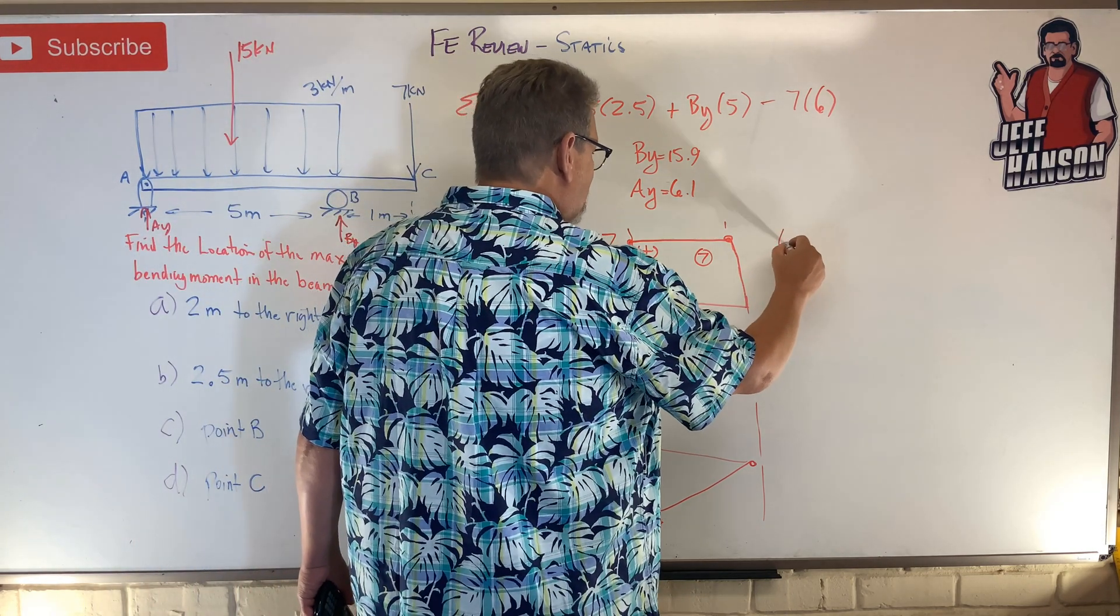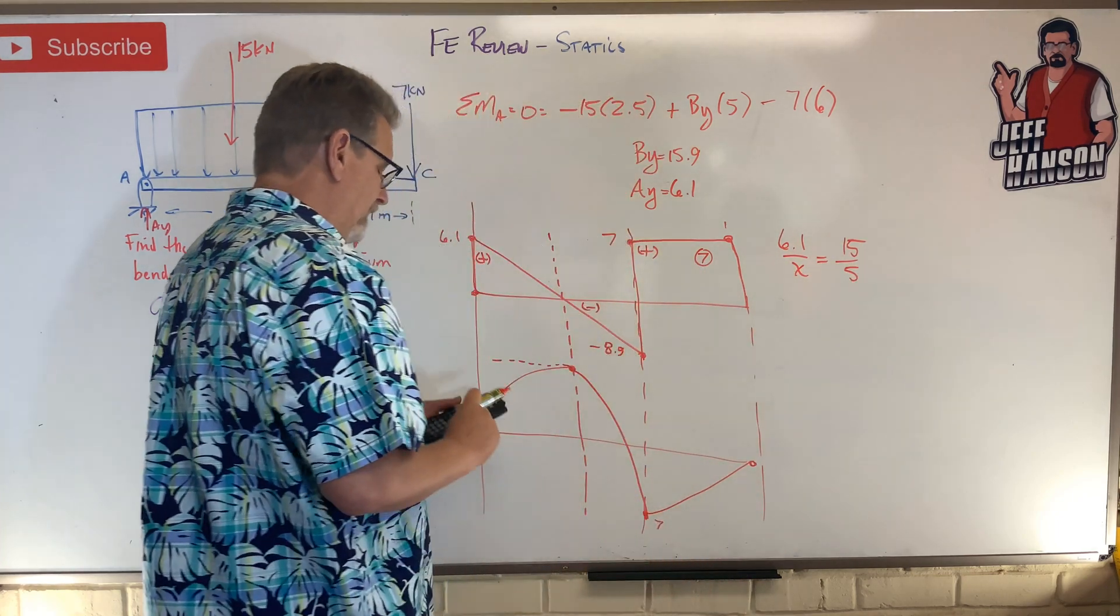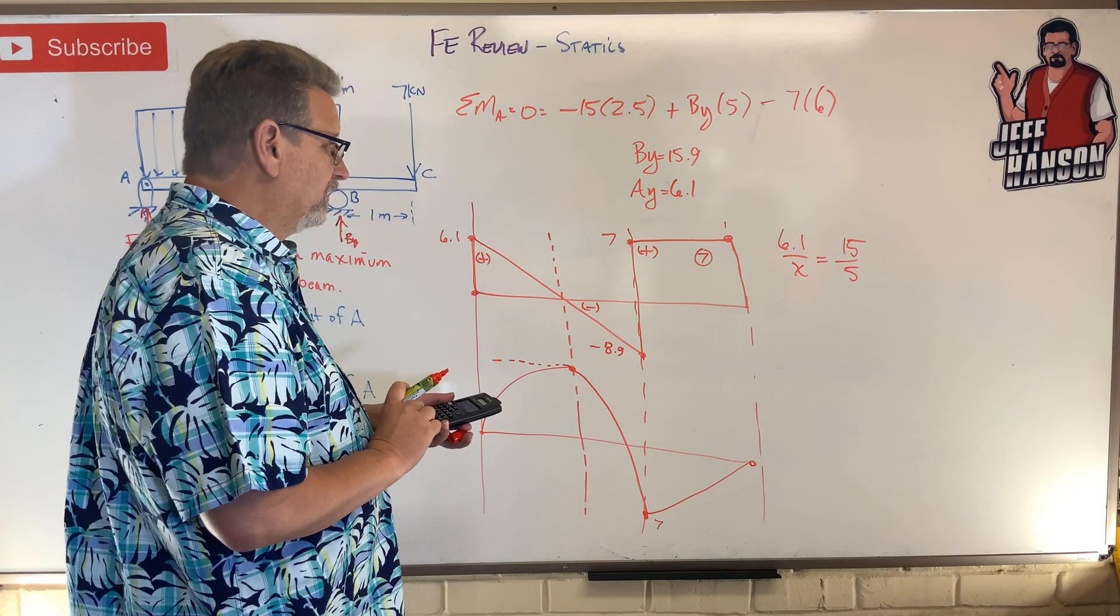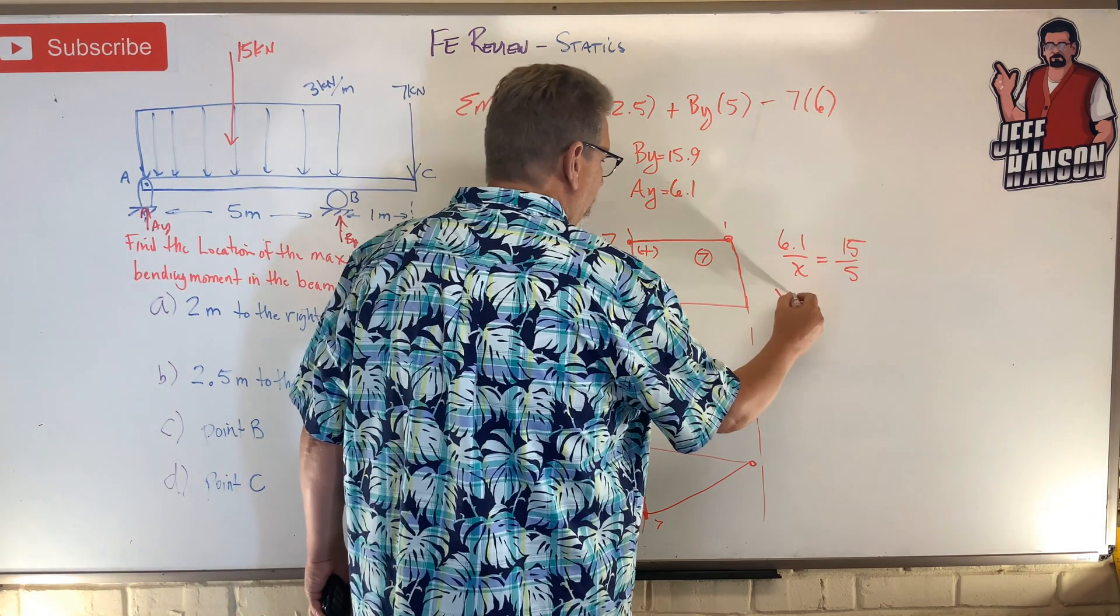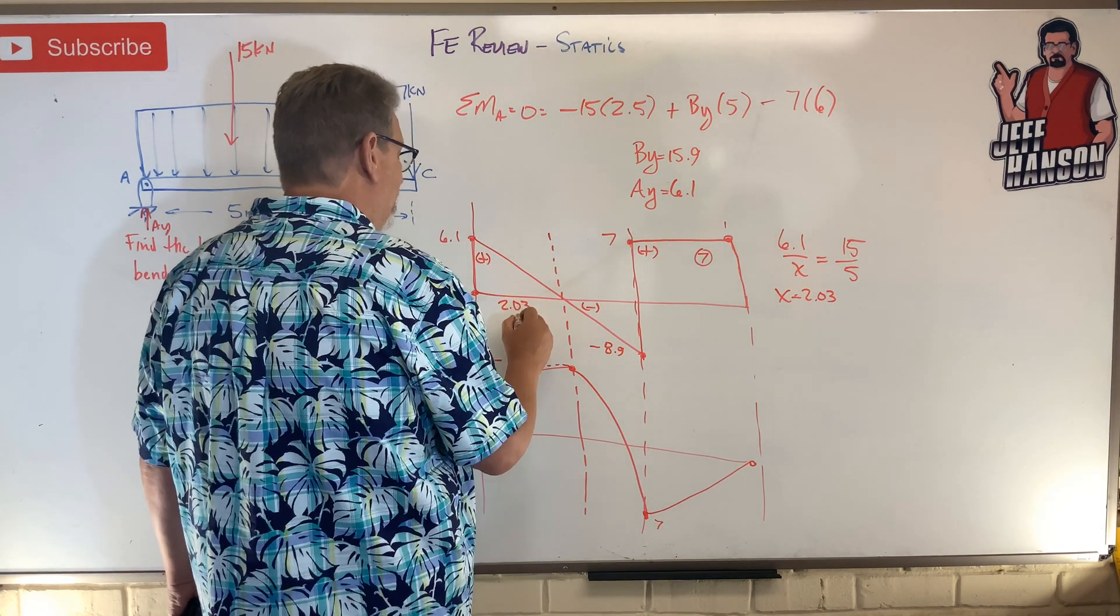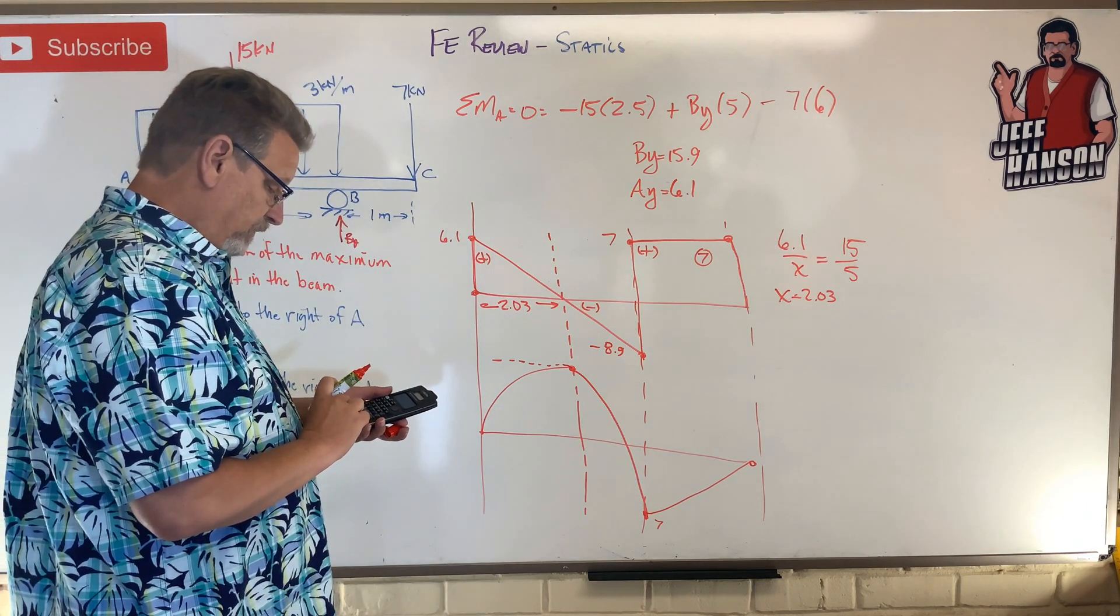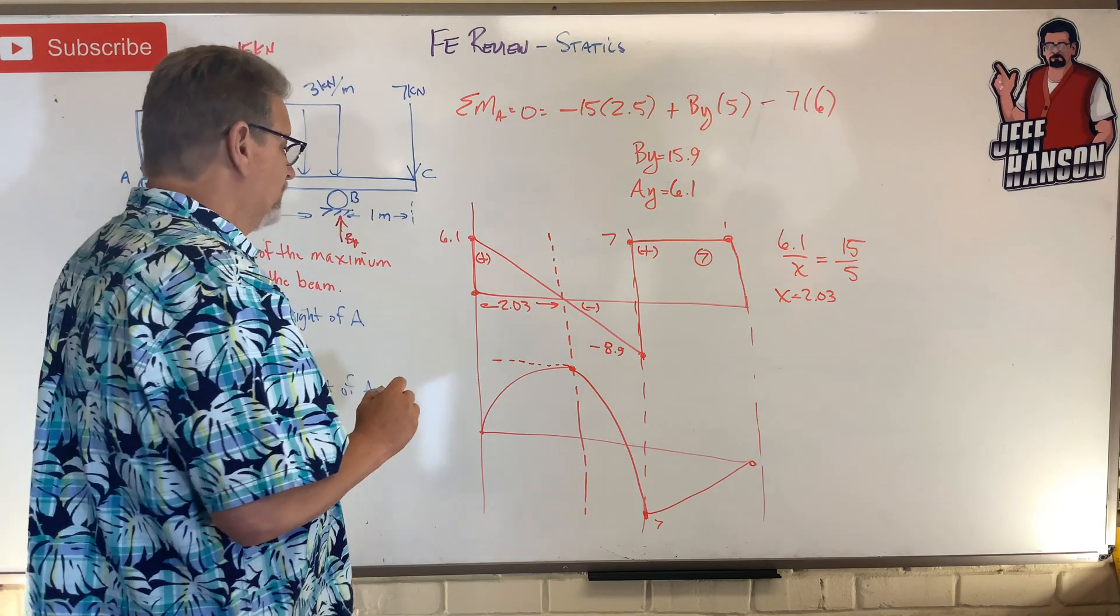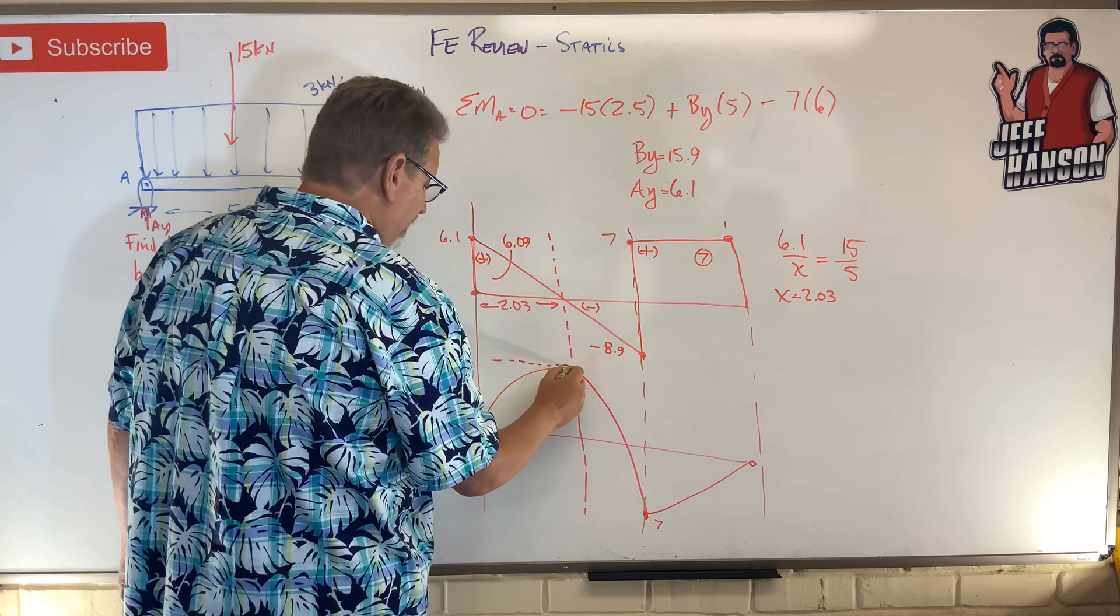I have to do this real quick. I have to do 6.1 is to x as 15 is to 5. So what is that? 6.1 times 5 divided by 15 equals 2.03. So this is 2.03 right here. How big is that area? 6 times 2.03 divided by 2 equals 6.09, almost 6.1 again. So this value right here is going to go uphill 6.09.